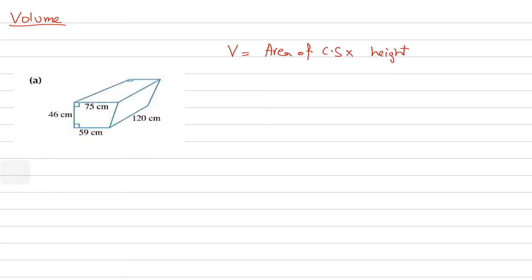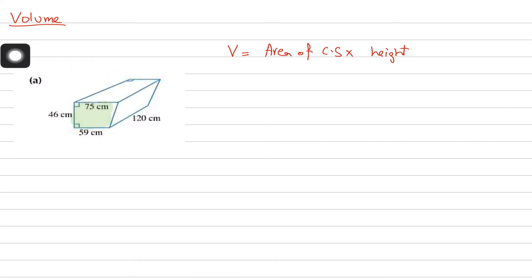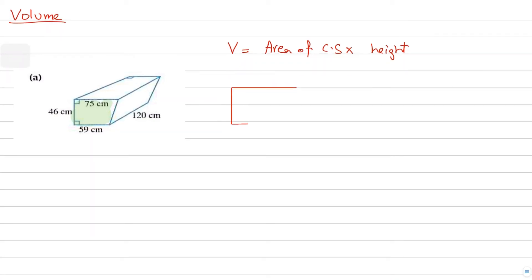Now let's do example questions. We have to find the volume of a prism. The formula is area of cross section multiplied by height. The cross section is the trapezium face at each end — it's the shape you get if you consistently slice the shape parallel to that face.